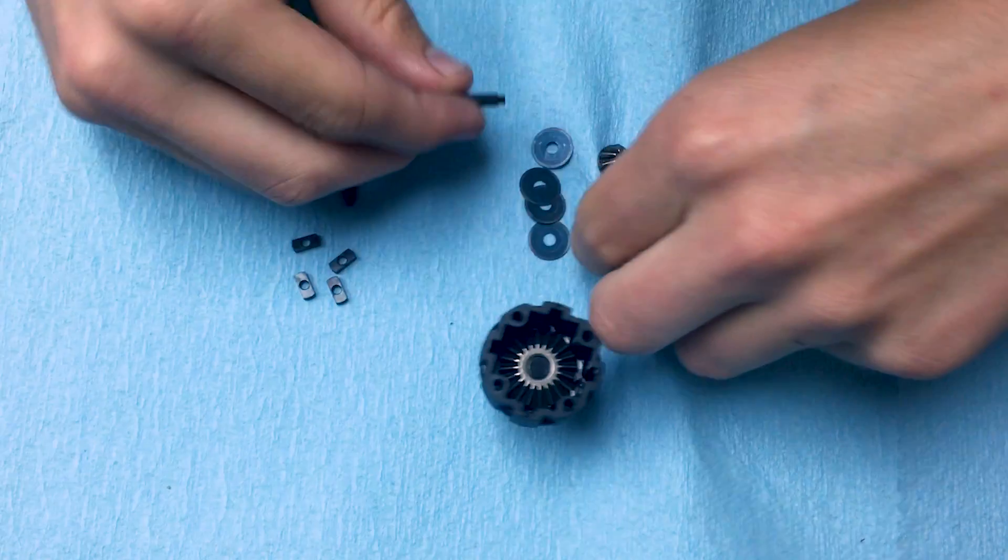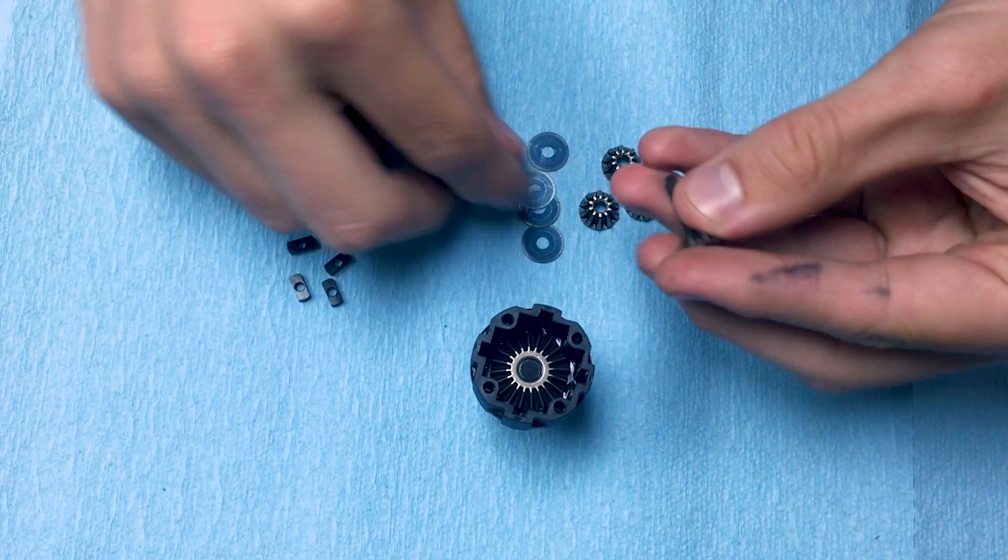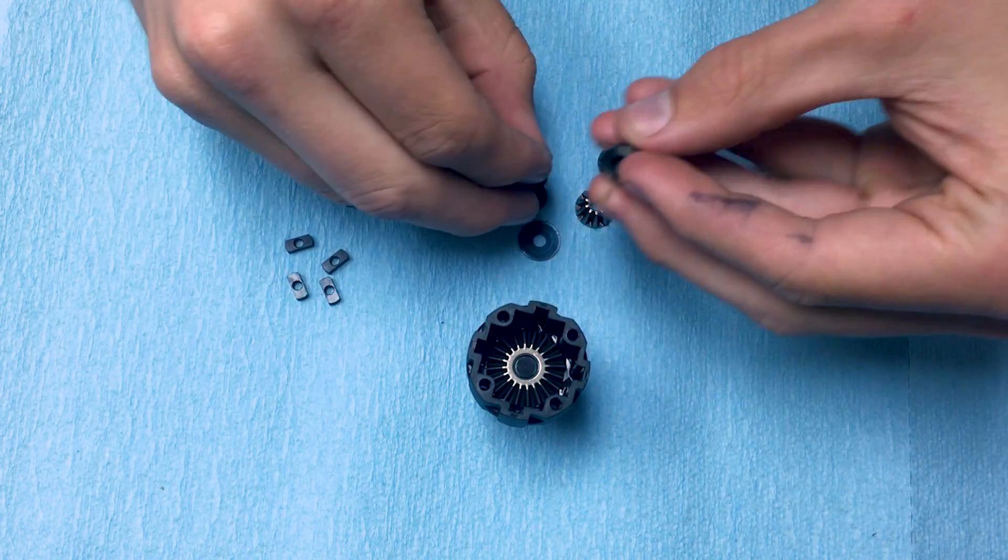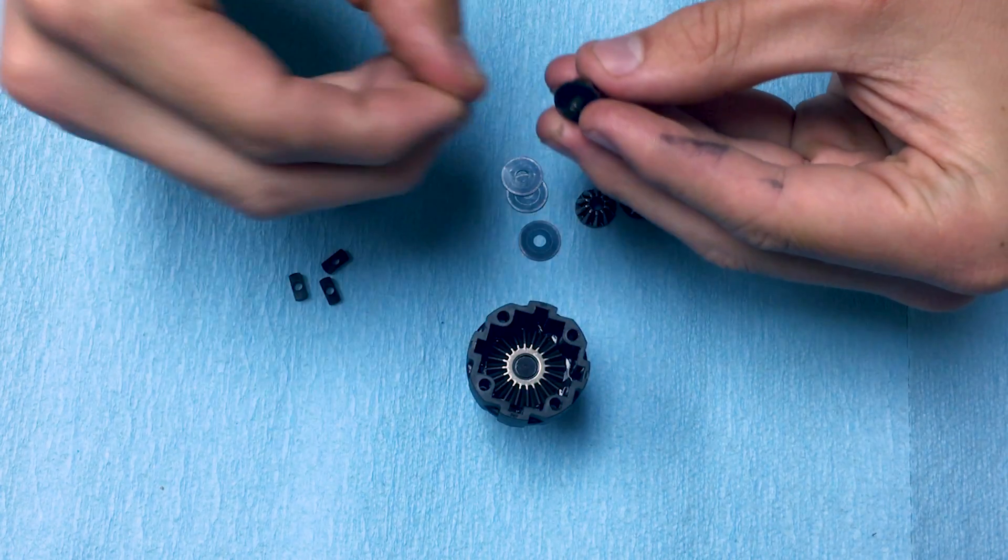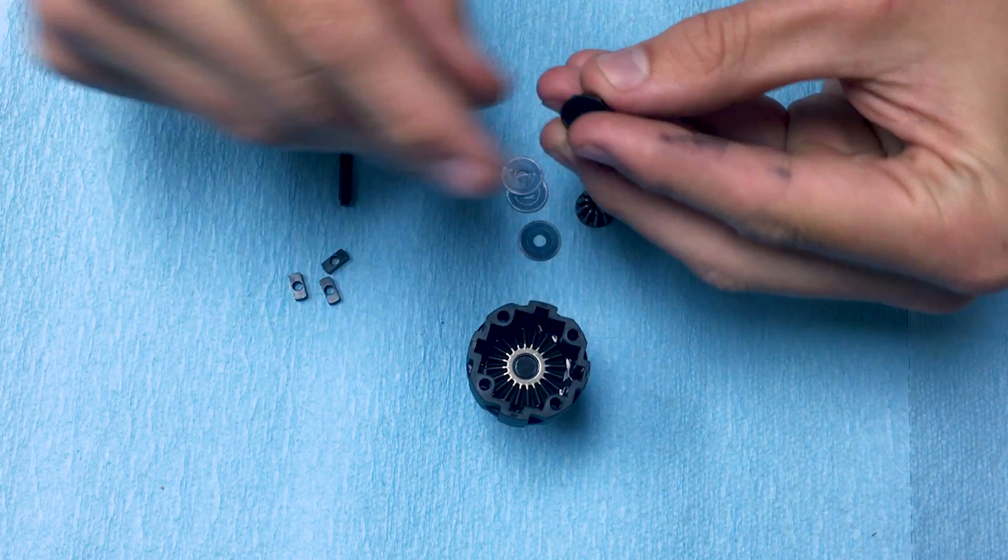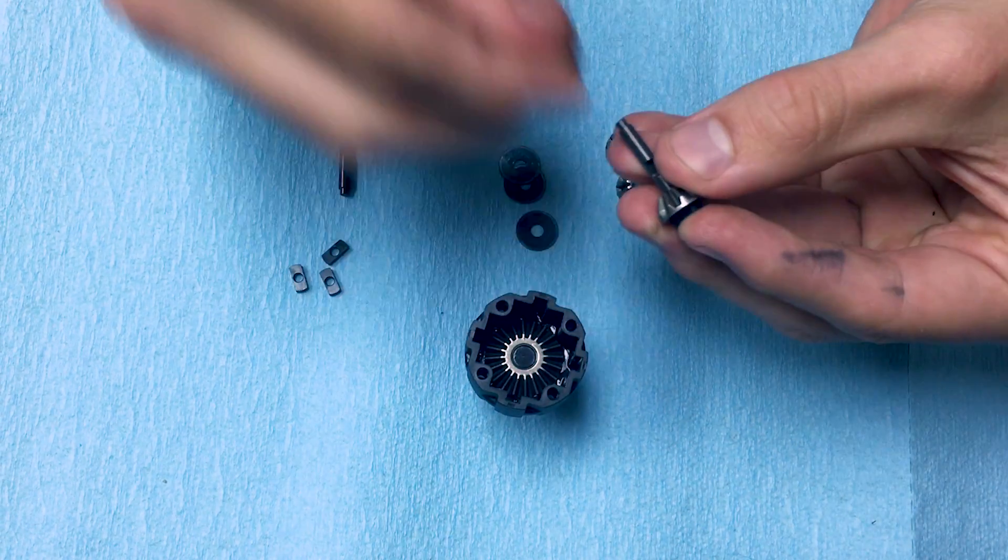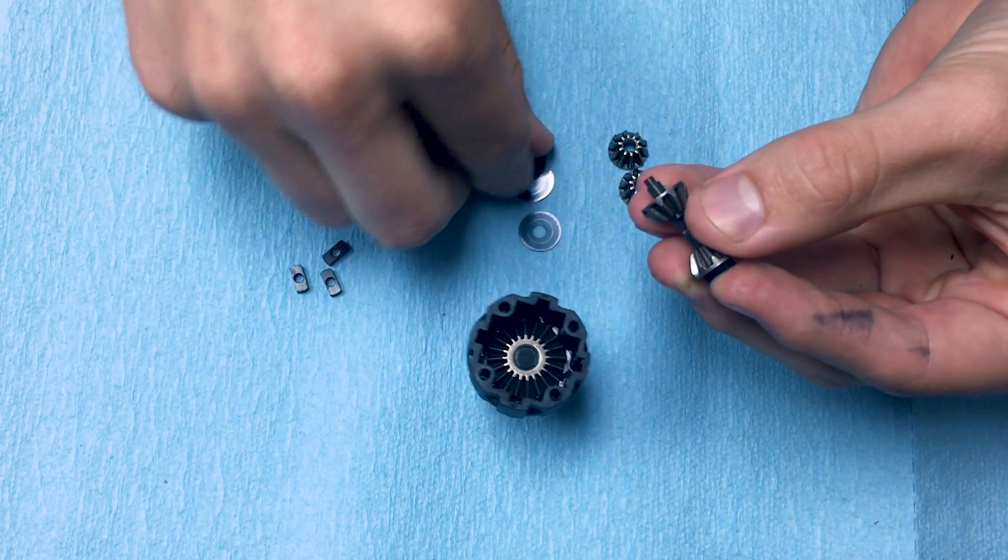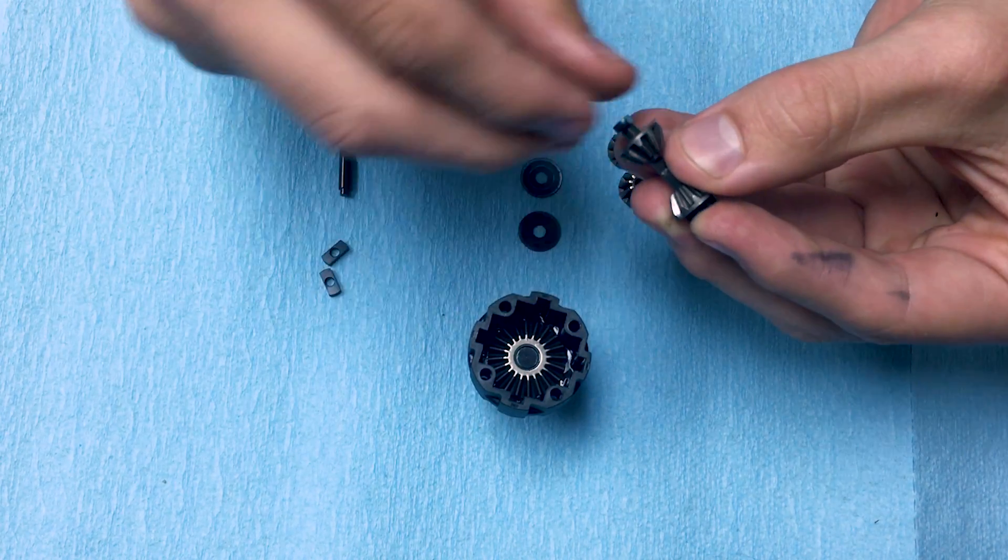These slide on and this is the way that I like to install these. So I'll do one planet gear first, I'll put a washer on and I'll put one insert and then I'll put the other planet gear on, the other washer and the second insert.